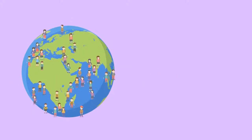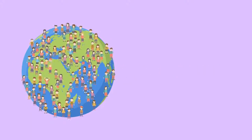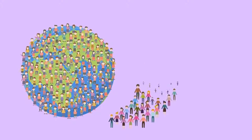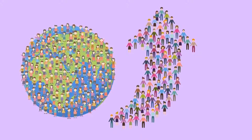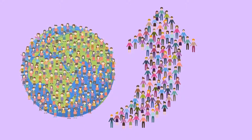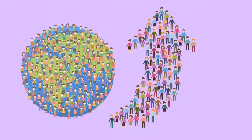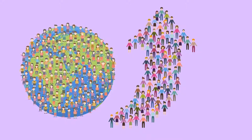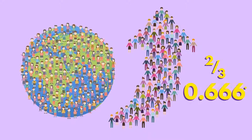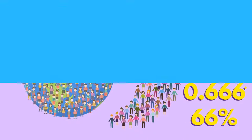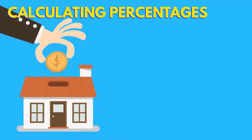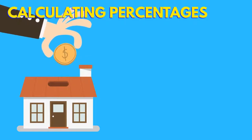Many real life situations involve growth and decay — an increase or decrease of a value as time passes by. Population numbers, world temperature patterns, and the value of money are examples of values that may increase or decrease over time. Values can be displayed as fractions, decimals, or percentages. Before we look at growth and decay, also known as percentage changes, we must firstly become familiar with calculating percentages.